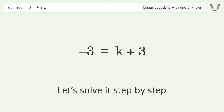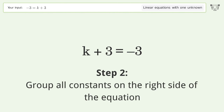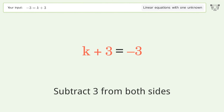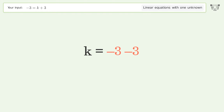Let's solve it step by step. Swap sides. Group all constants on the right side of the equation — subtract 3 from both sides. Simplify the arithmetic. And so the final result is k equals negative 6.